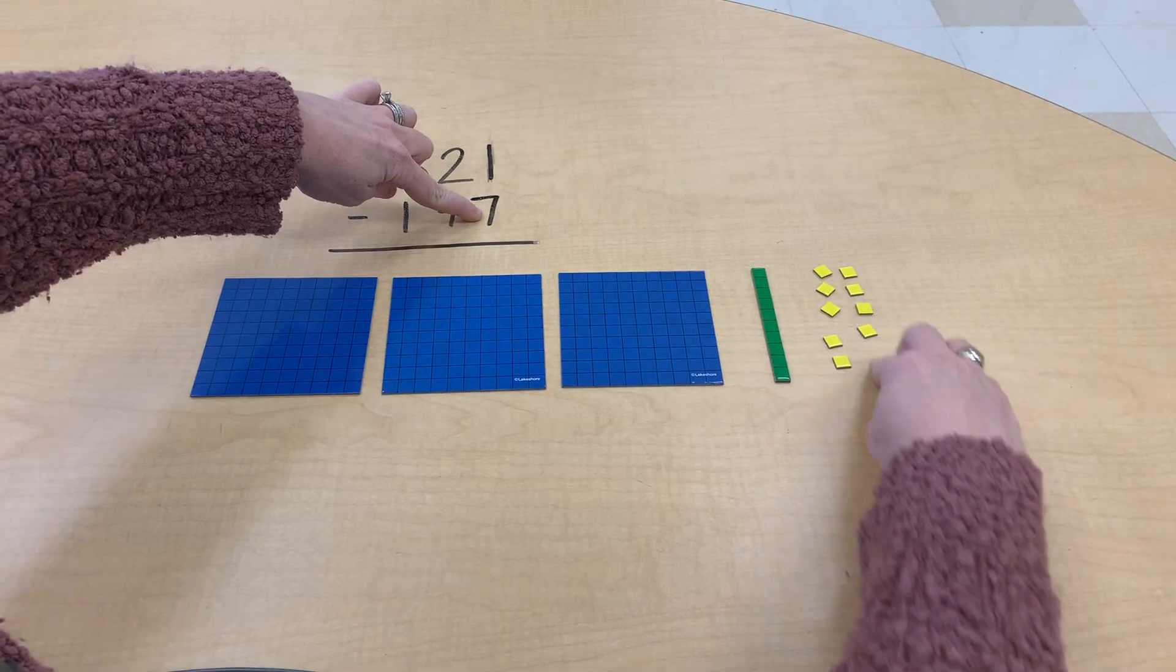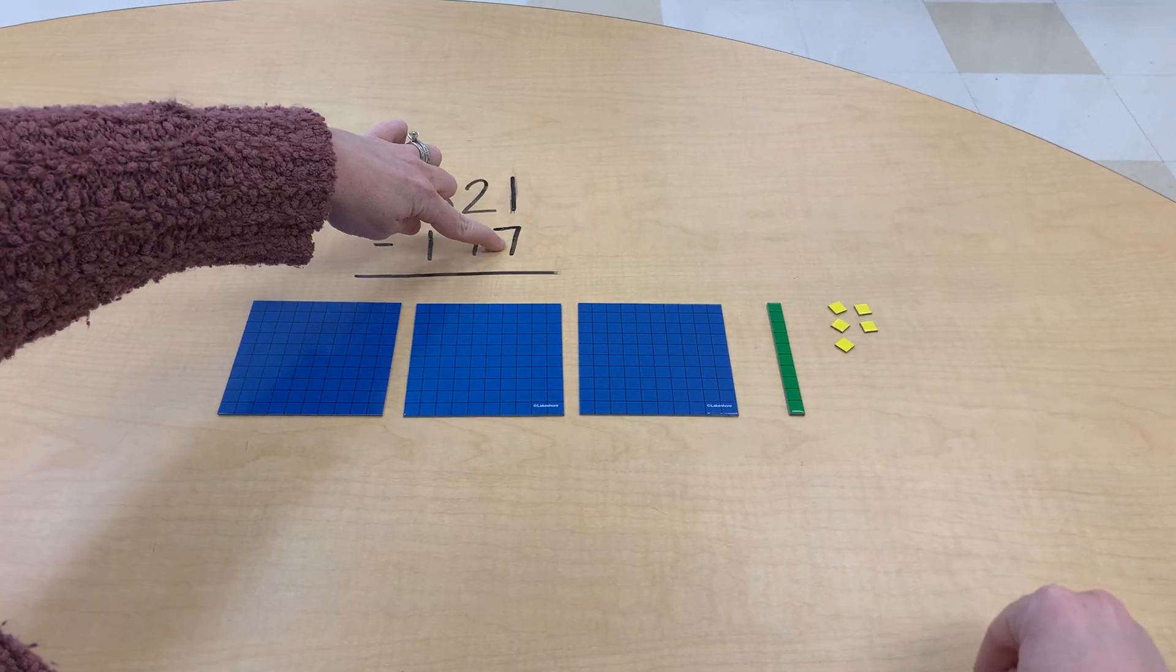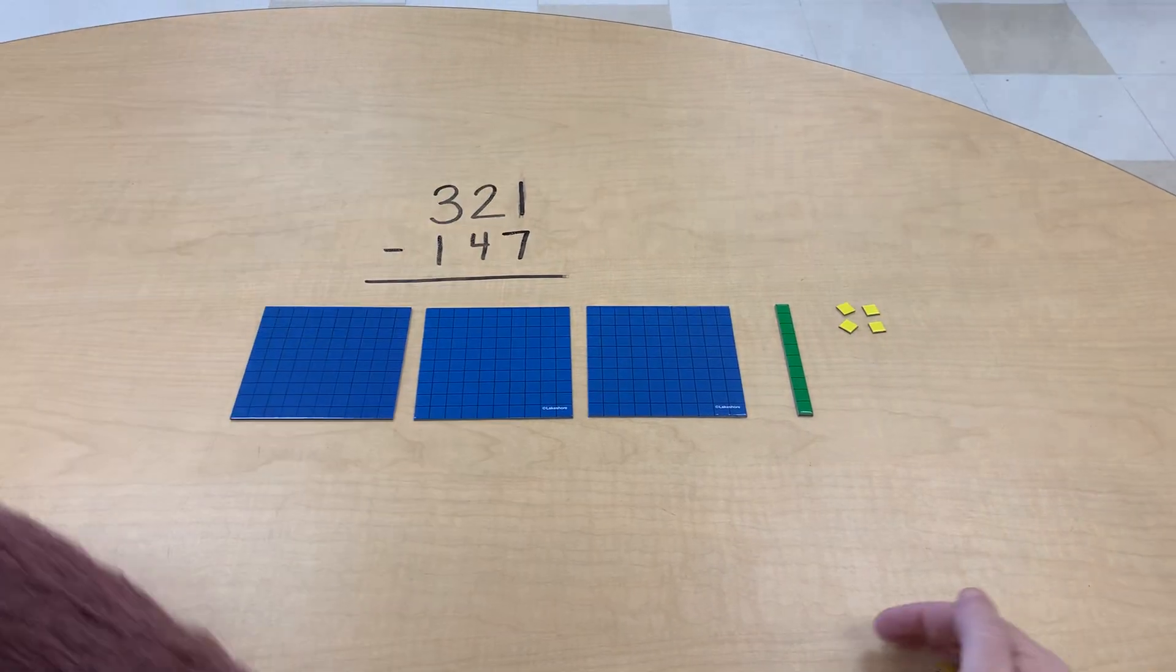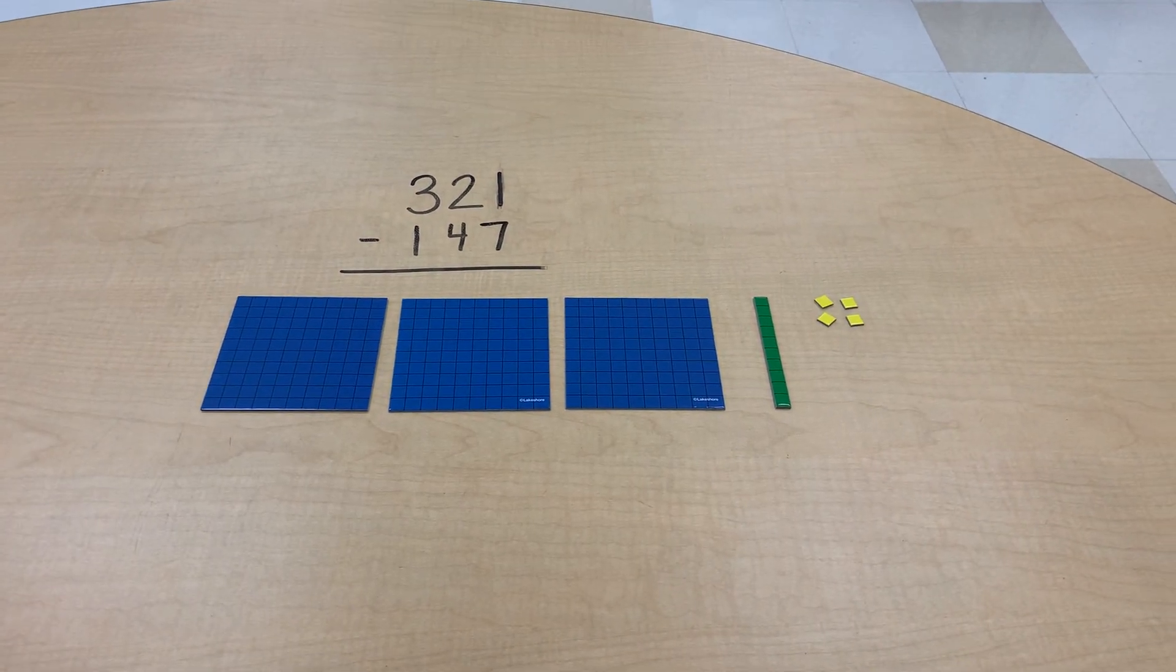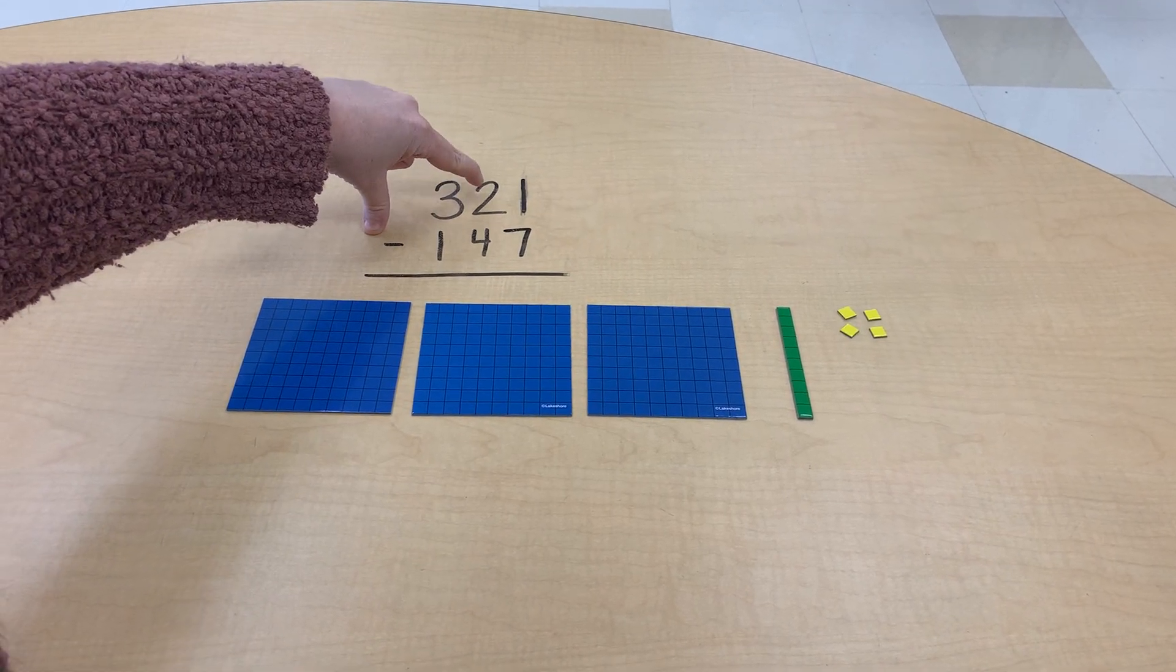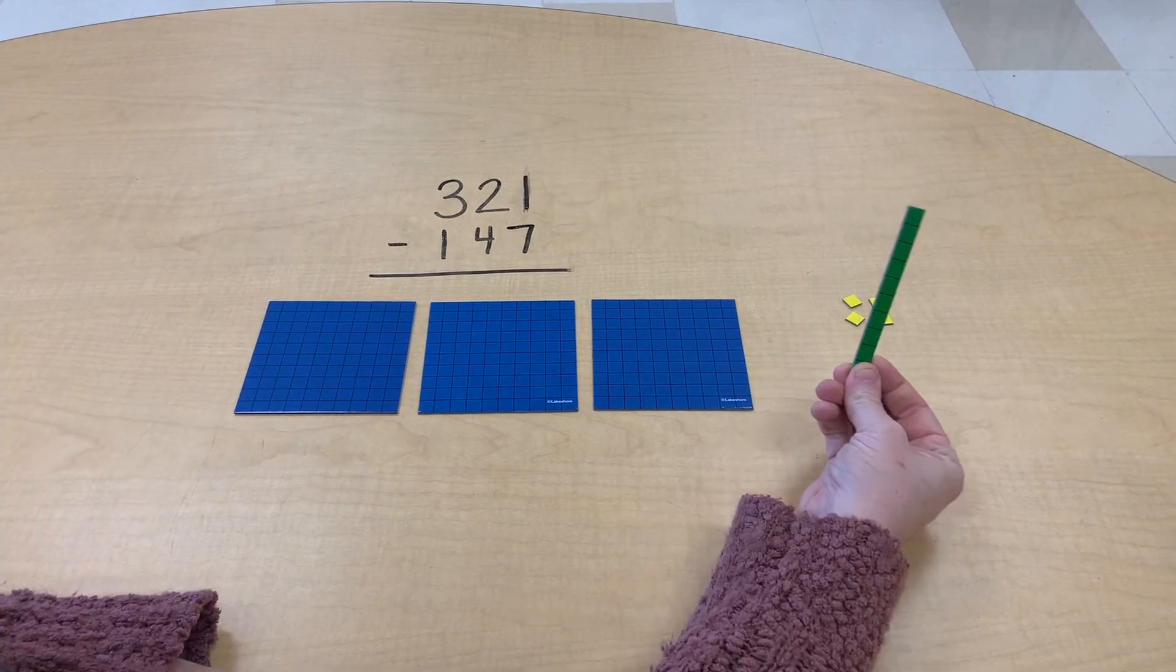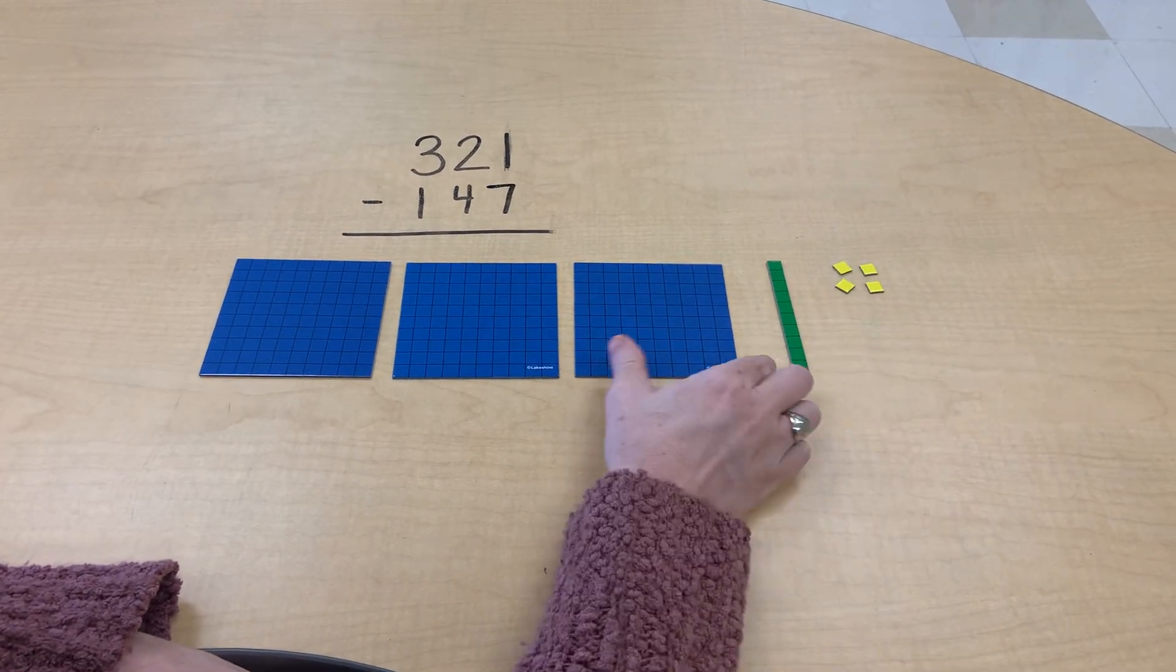One, two, three, four, five, six, seven. All right. Now we're moving into our tens place. We have two, take away four. I cannot take away four from what I have left. So I can regroup from the hundreds place.